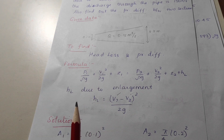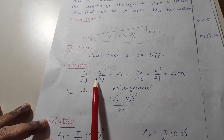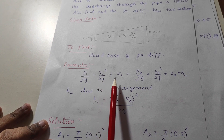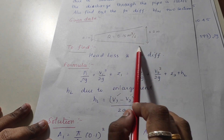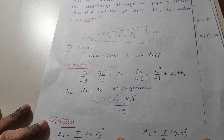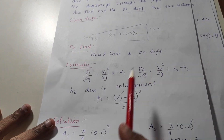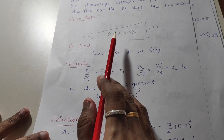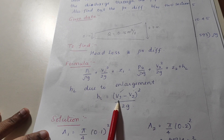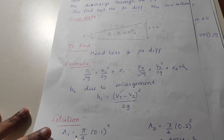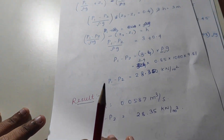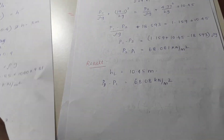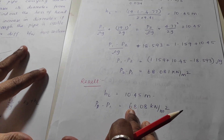Apply Bernoulli's equation: P1/ρg plus V1²/2g plus Z1 equals the same terms at section 2 plus head loss. To find the velocities, use the given discharge. If you know the area, you can find the velocity. Area A1 equals π/4 into diameter (0.1)², and similarly A2. From these areas you can find velocities V1 and V2.